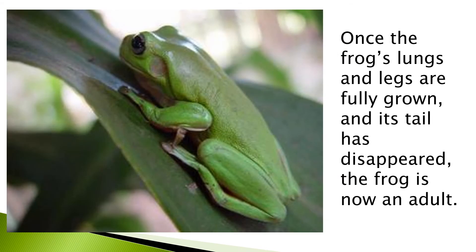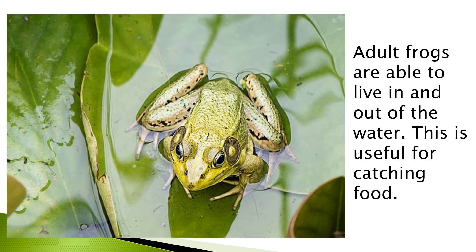Once the frog's lungs and legs are fully grown and its tail has disappeared, the frog is now an adult. Adult frogs are able to live in and out of the water, which is useful for catching food.